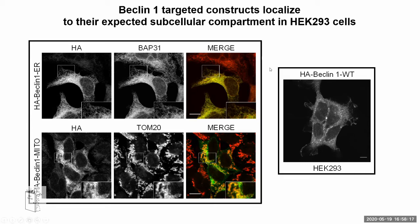The first thing we did was make sure our constructs were going to the correct compartment. We used HEK293 cells — a stable cell line with HA-tagged Beclin-1 targeted to the ER and to the mitochondria. We performed double immunofluorescence against HA and PDI31, which is an ER marker. From the merge picture, there is a very nice co-localization showing the ER construct is going to the correct compartment. For the mitochondria construct, we used HA and TOM20; there is good but partial co-localization.